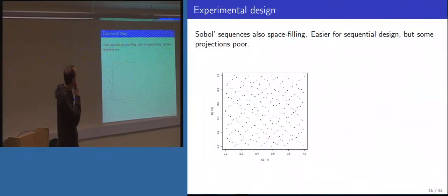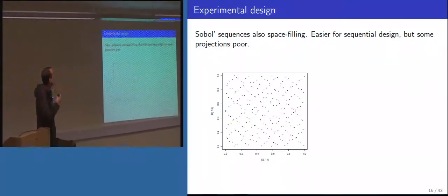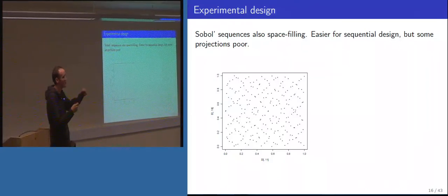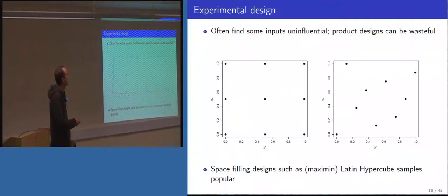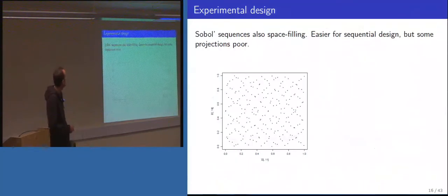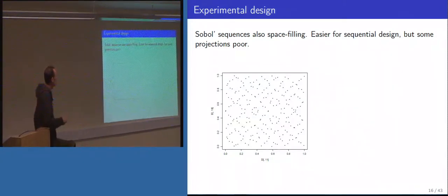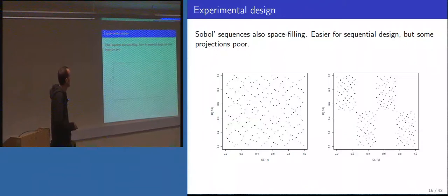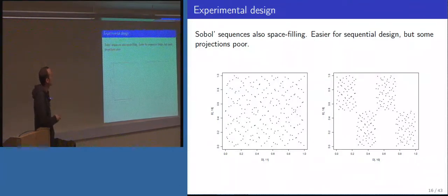Another technique is the Sobol sequence — a deterministic sequence with nice sequential properties: the longer you run it the more it fills the space. If you start with a 9-point Sobol sequence and want 18 points you can just extend it, unlike the Latin hypercube where you'd have to start again. However, some two-dimensional projections give quite funny patterns in higher dimensions, so I still prefer the Latin hypercube despite the better sequential properties of Sobol.